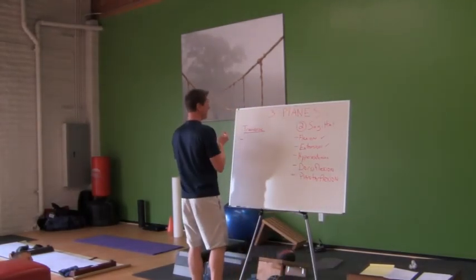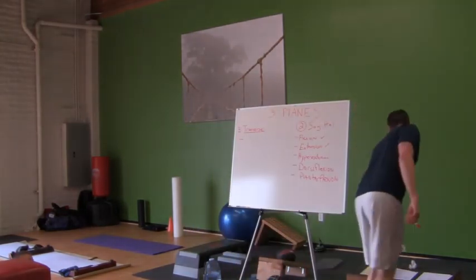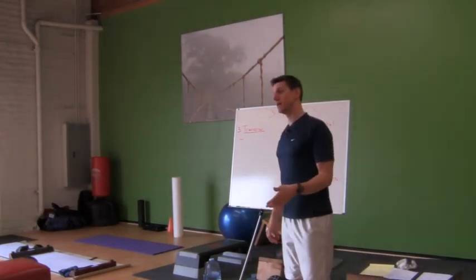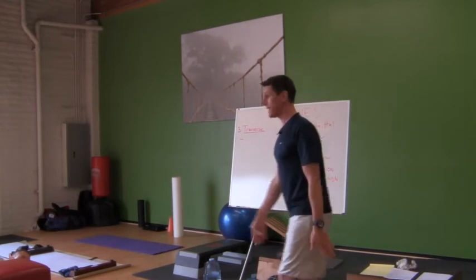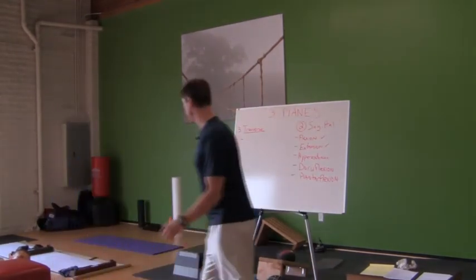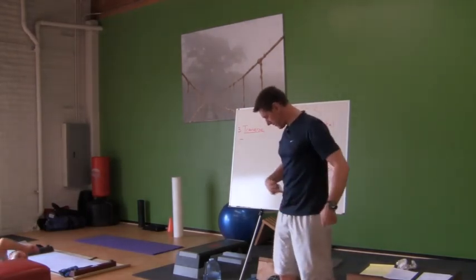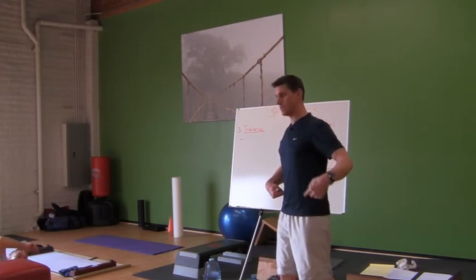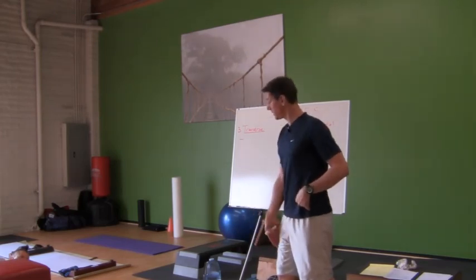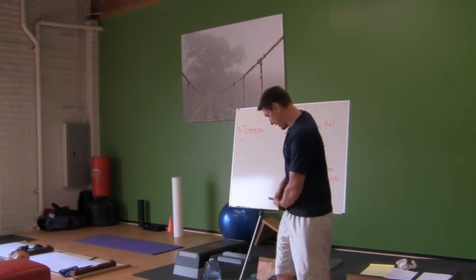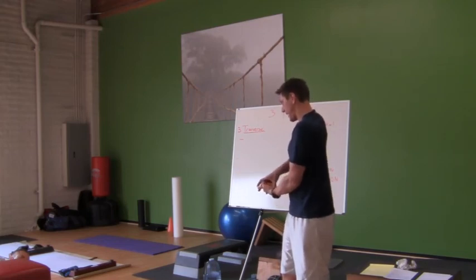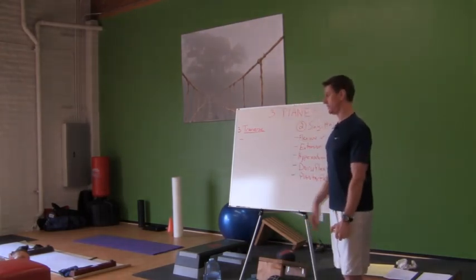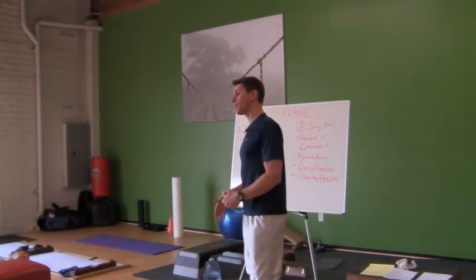Everything that rotates in the body is on the transverse plane. The other reason it's your favorite is because rotation occurs all the time. When you walk, it may look like all sagittal plane stuff, but it isn't. When you take a step forward, my pelvis on my right side is in front of my pelvis on my left side, but my femur is still pointing in the same direction. So some rotation occurred at my pelvis by taking a step. If this stays going forward and my pelvis moves forward, I've got rotation — there's rotation in walking, running, everything. We can't move without rotation.